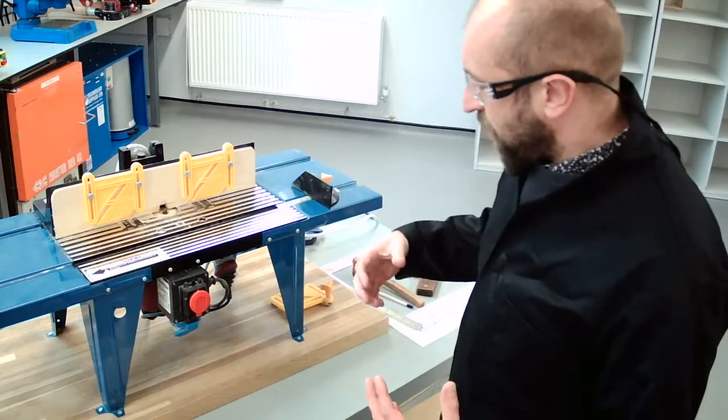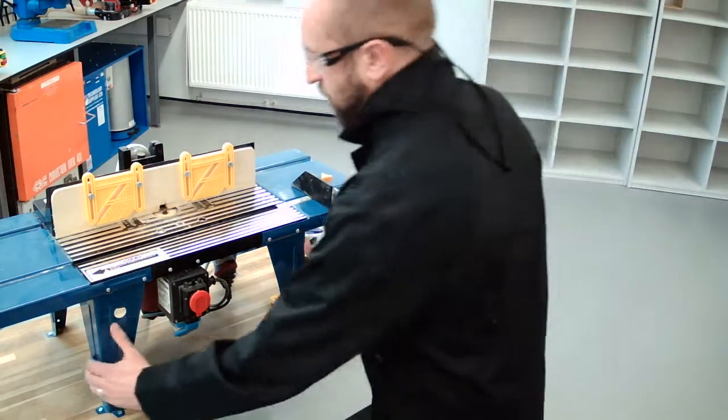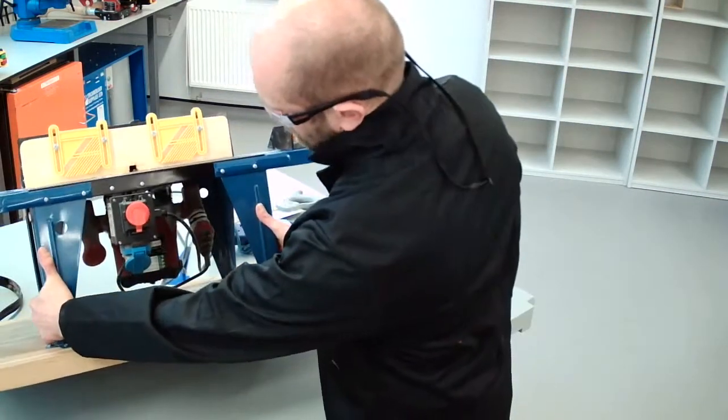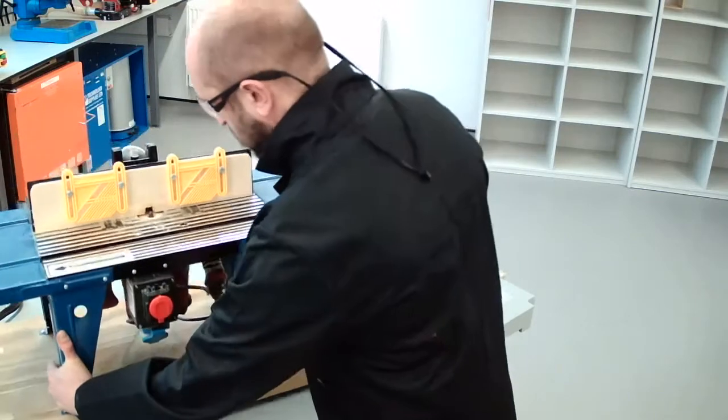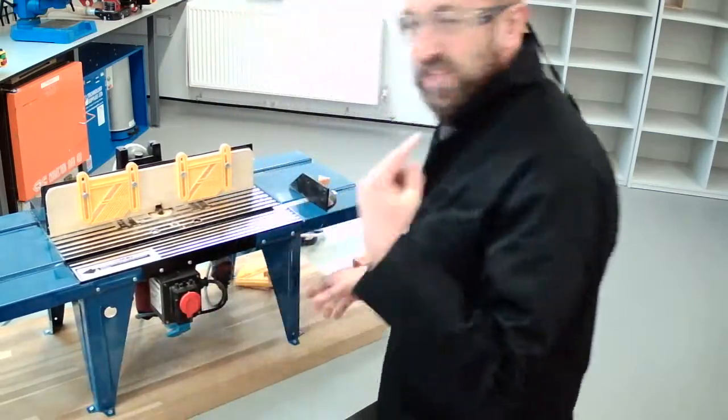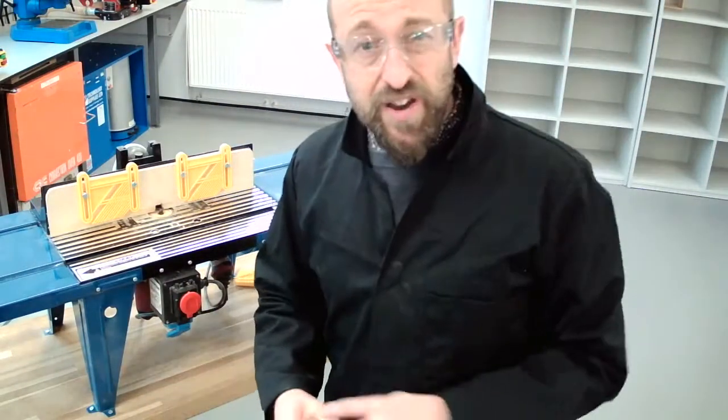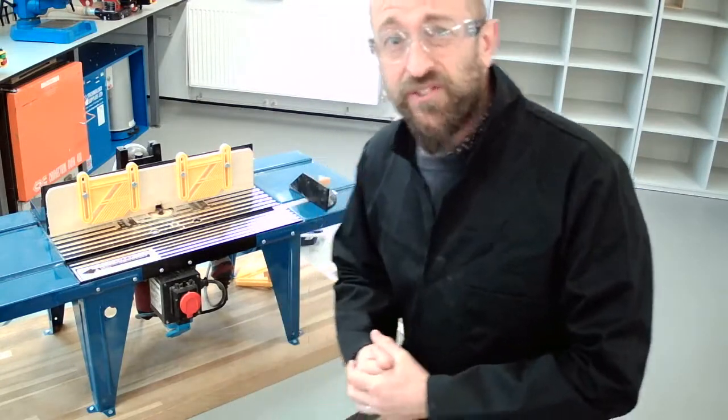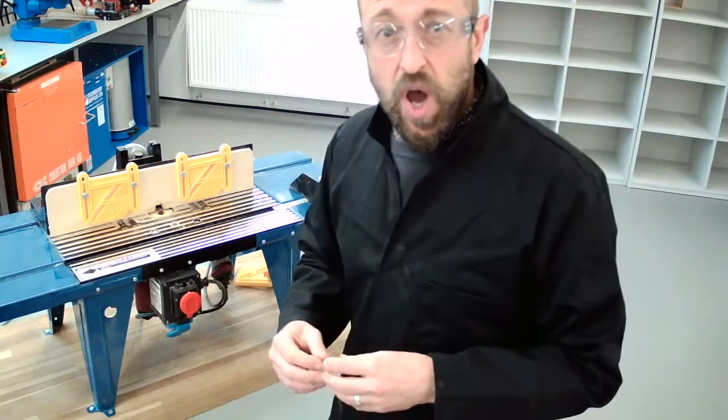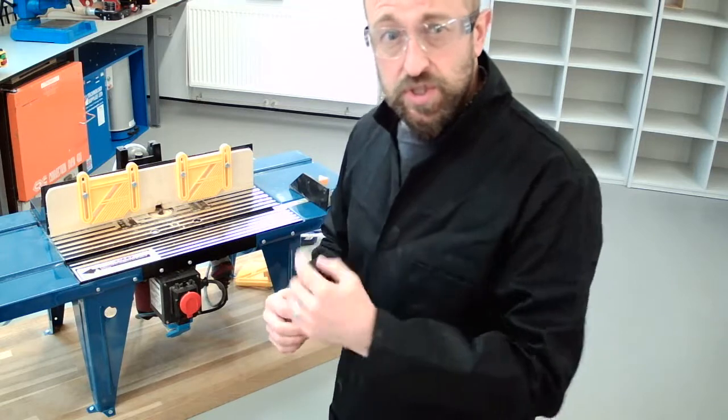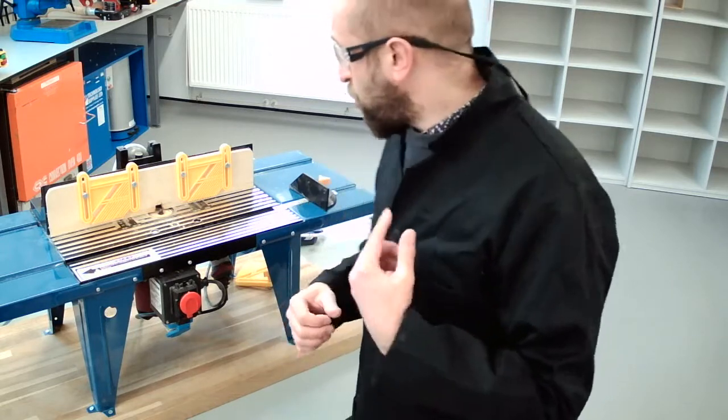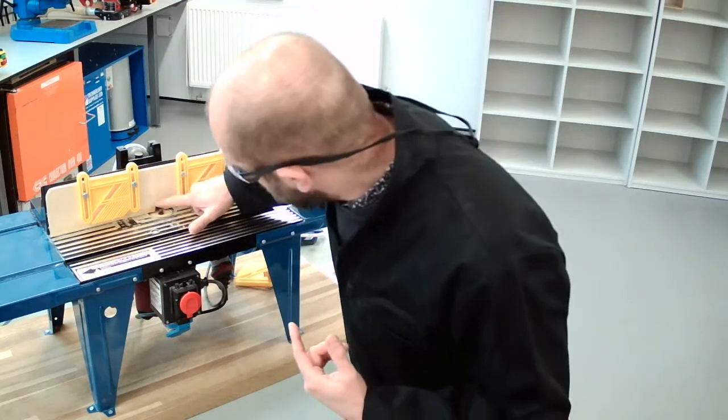The principle behind the router is we've got the actual router that sits underneath, so you might be able to see that burgundy-coloured component. That spins a cutting tool very, very, very fast, something like 15,000 RPM, 15,000 revolutions or turns per minute. And this here is our cutter.